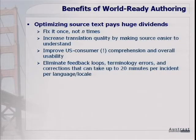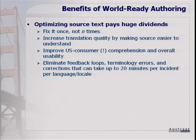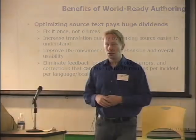What are some of the benefits of world-ready authoring? Well, if you have forty languages and you fix it once in English, you don't have to fix it forty times. It's simple multiplication: if you remediate it once, you don't have to fix it over and over again in the translated copy. The translation quality goes up and the source text becomes easier to understand for US consumers. Oddly enough, good writing for translation is actually typically just good writing, period.